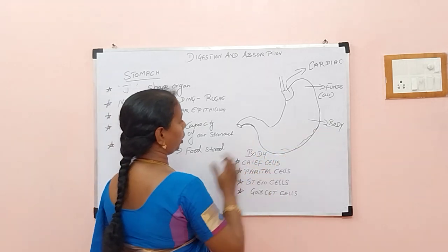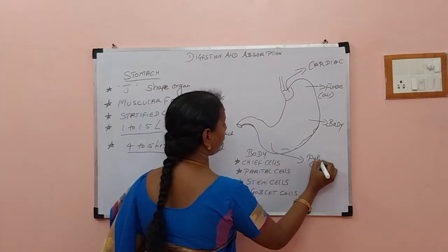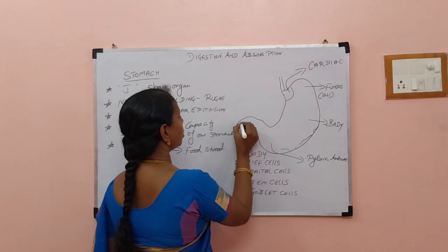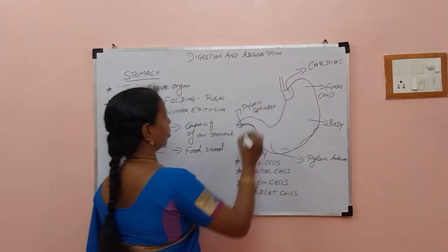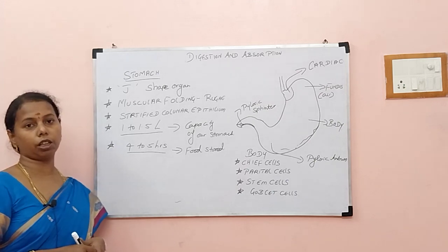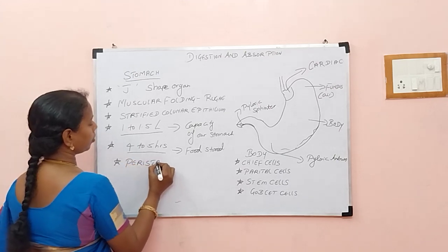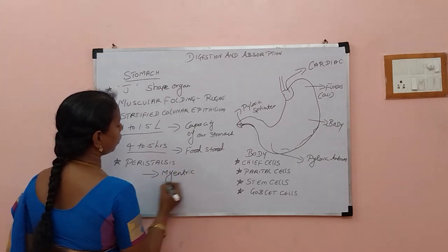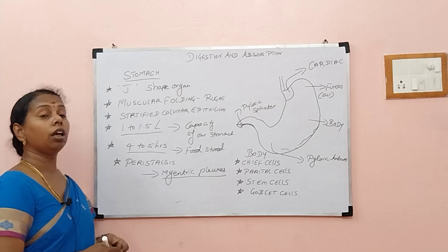These are the cells we find in the body region. Then the J-shaped curved region — we find the pyloric antrum, and here you will have the pyloric sphincter. Do we find peristaltic activity here in the stomach? Yes, of course — peristaltic activity continues even in the stomach. It is under the control of the myenteric plexus nerve, also called Auerbach's plexus. The myenteric plexus is the nerve that controls the stomach.